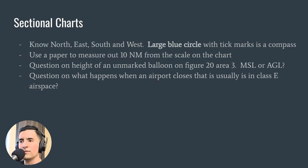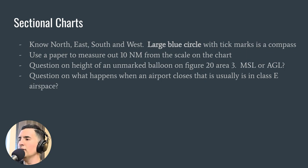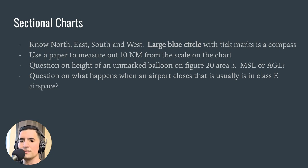Know what northeast, south, and west are in degrees. North is 0 degrees, east is 90, south is 180, and west is 270. On the chart they drop the zeros, so you'll see 9 for east, 18 for south, and 27 for west. There's also a large blue circle with tick marks — that's your compass. I didn't realize that until two nights before the exam.